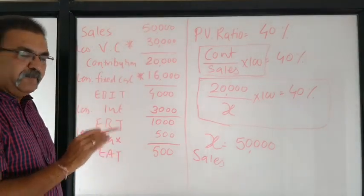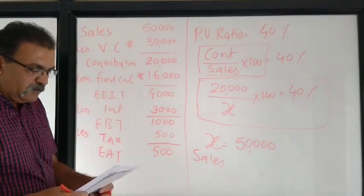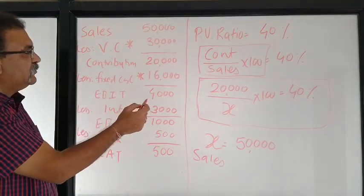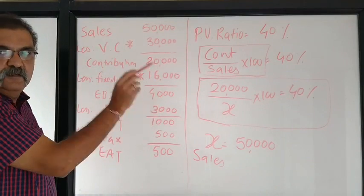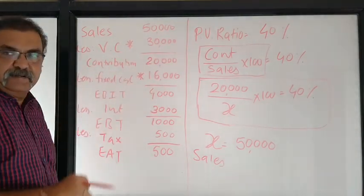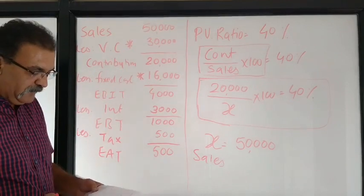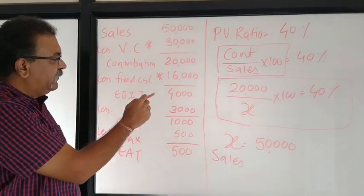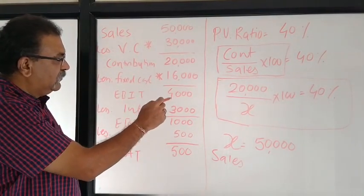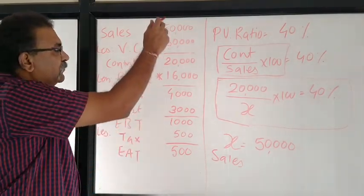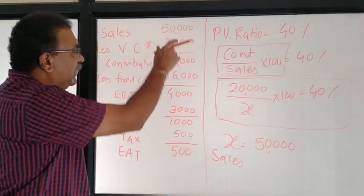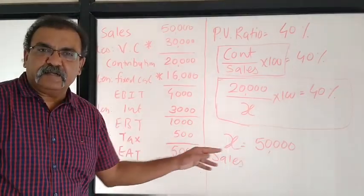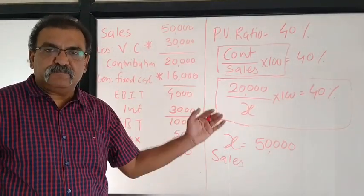Now cross-check: Operating Leverage formula is Contribution upon EBIT - 20,000 divided by 4,000 equals 5. Confirmed. Financial Leverage formula is EBIT upon EBT - 4,000 divided by 1,000 equals 4. Confirmed. The complete income statement for Sure Limited: Sales 50,000; Variable Cost 30,000; Contribution 20,000; Fixed Cost 16,000; EBIT 4,000; Interest 3,000; EBT 1,000; Tax 500; Earnings After Tax 500.